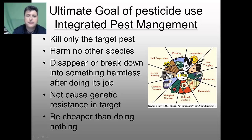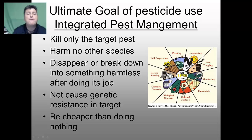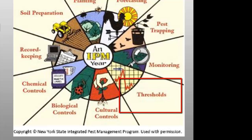Integrated pest management isn't a single pest control method, but rather a series of pest management evaluations, decisions and controls. In practicing IPM, growers aware of the potential for pest infestation follow a four-tiered approach. First, we set thresholds. Before taking any pest control action, we must set an action threshold — the point at which pest populations or environmental conditions indicate that pest control action must be taken. Seeing a single pest doesn't always mean pest control is needed; the level at which pests will become an economic threat is critical to guiding future pest control decisions.